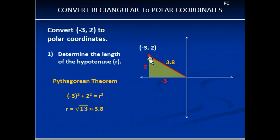We'll have (-3, 2), and that gives us a nice right triangle, so we can use the Pythagorean theorem to find the hypotenuse, which we call r. So if we do that, we end up with a square root of 13, which is about 3.8.